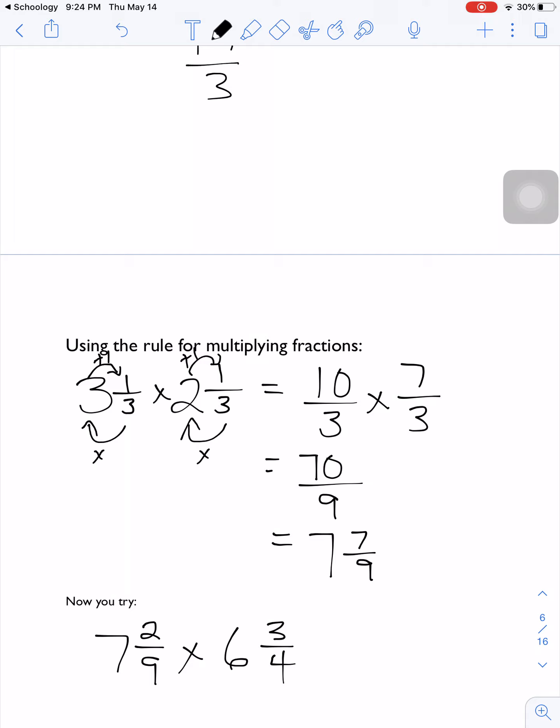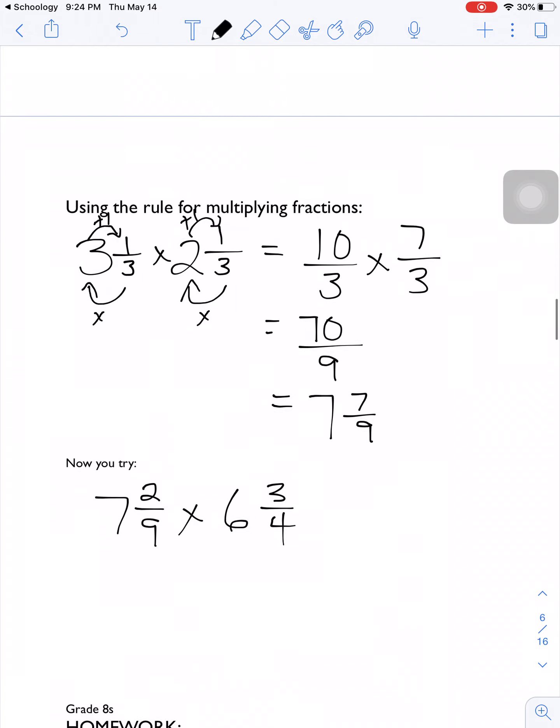One last step: change it back to a mixed number, and then we've got to make sure it's in lowest terms. So the closest we can get to 70 when we divide by 9 is 63. 7 times 9 is 63, and we have 7/9 left over to get up to 70. So that's our final answer, and that is in lowest terms.